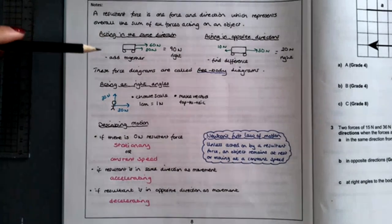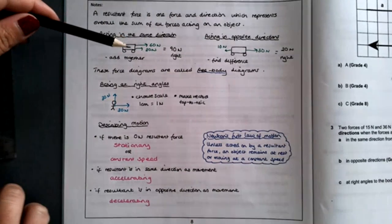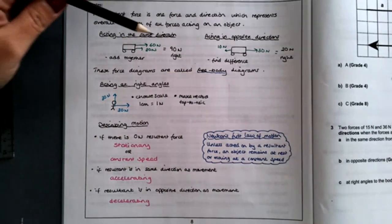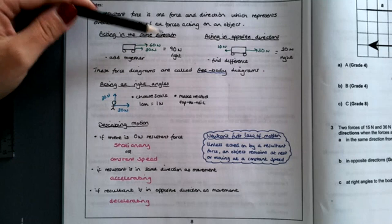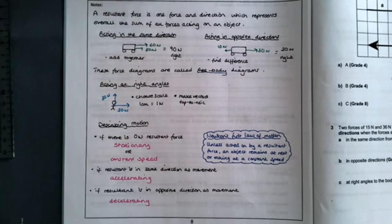If they're acting in the same direction as each other, then all you need to do is add them together. This is the example on the PowerPoint: 60 and 30 to the right gives you overall a resultant of 90 newtons to the right.